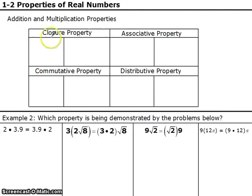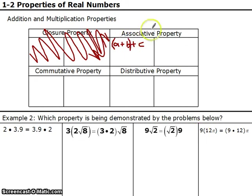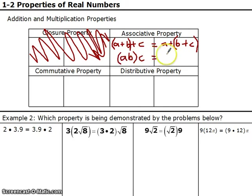Let's talk about the associative property. This requires three different letters: A plus B plus C. We use parentheses to associate things. The associative property says I can associate (A plus B) plus C, and that equals A plus (B plus C). You can move those parentheses around and re-associate in any way, and it always comes out equal. It works for multiplication too: (A times B) times C equals A times (B times C).